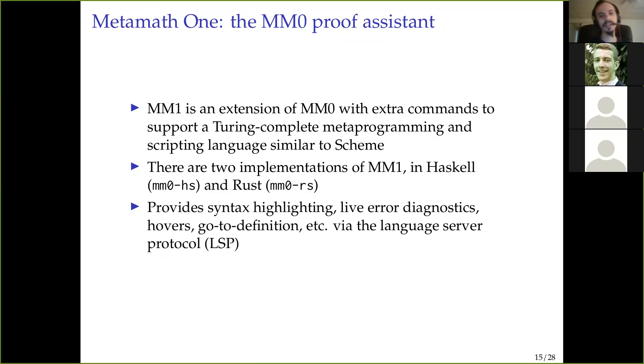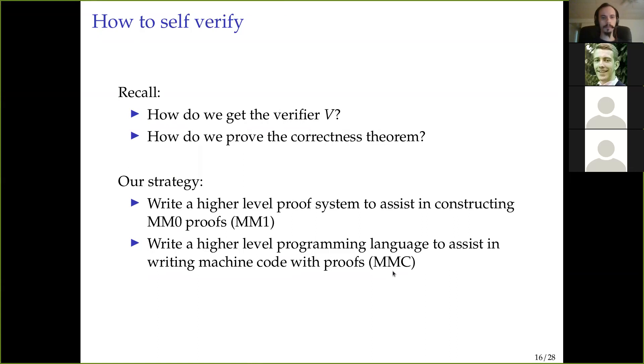Okay, so the proof assistant, MetaMath 1, is an extension of MM0. As we saw, MM0 didn't have a way to say proofs. It just, you just state theorems, you don't prove them. MM1 adds a way for you to say, oh, and by the way, the proof is this. And it also adds a Turing complete metaprogramming slash scripting language, which is based on scheme. There are two implementations of this in Haskell and Rust. The Haskell one is deprecated.